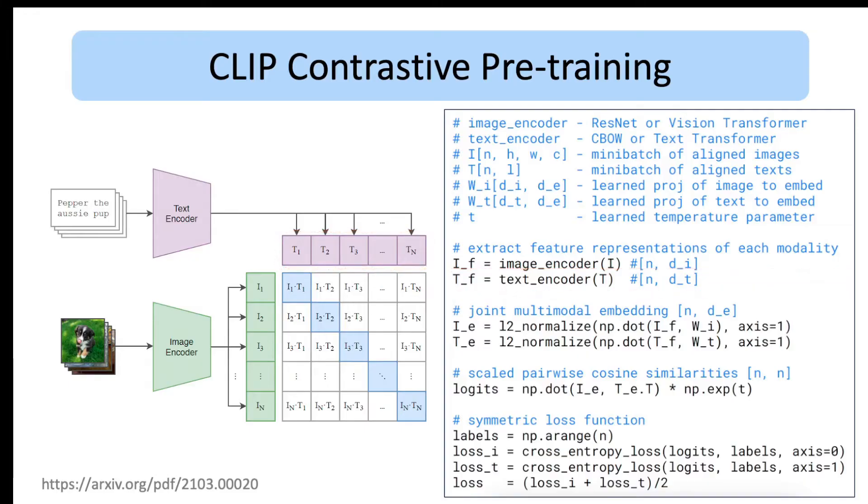We normalize these representations with L2 and perform dot product between the normalized image and text representations. As a result, we get a matrix of similarities. Note that the true labels are on the diagonal of this matrix, so we can construct an array of labels for correct pairings simply with this np.arange function.